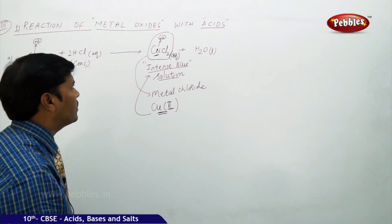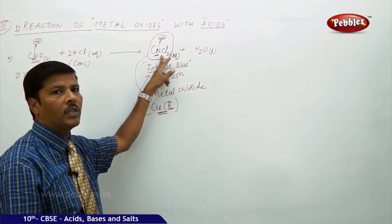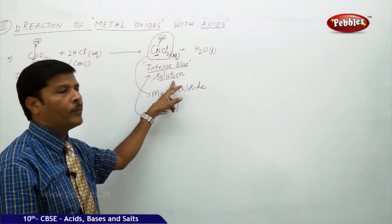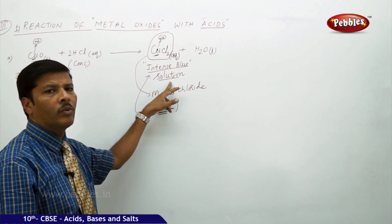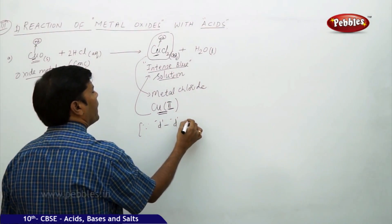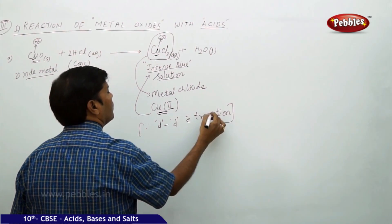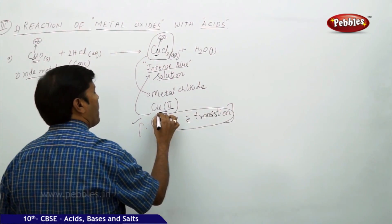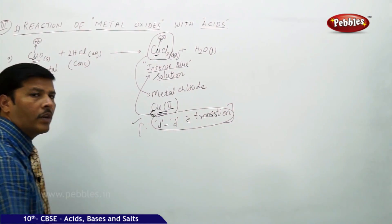When copper is in the +2 state, it has unpaired electrons in its orbitals. If you write the electronic configuration of copper, it contains unpaired electrons. Any metal cation that is a transition metal contains unpaired electrons in its orbitals, and that metal chloride will show intense blue color formation. The intensity of the color is due to d-to-d electron transition of the cupric ion — this is what you have to keep in mind.